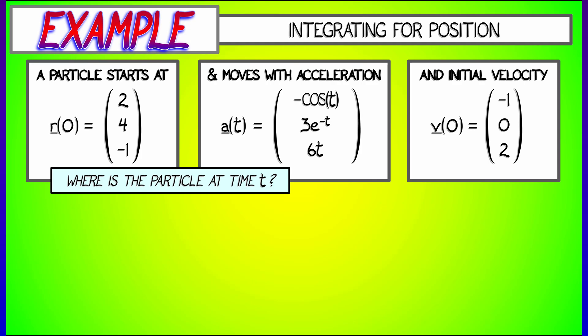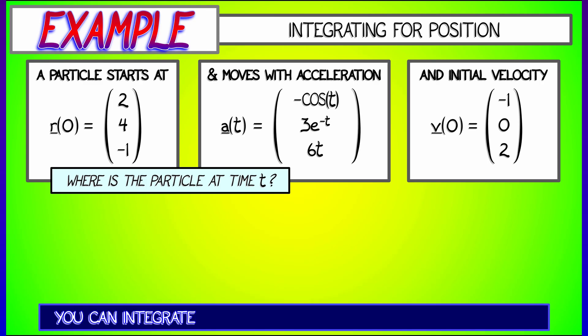Now, of course, you know what to do. You integrate acceleration to get velocity, you integrate velocity to get position. But now, instead of the way you did in single variable calculus where it was just one term, like say the x-coordinate, now we have x-coordinate, y-coordinate, and z-coordinate.